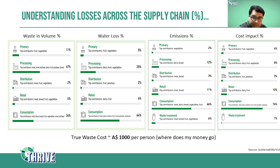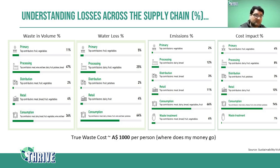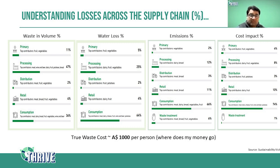We can see that the maximum waste occurs at the consumption level across the supply chain. Looking at all four tables — waste by volume percentage, water loss percentage, emission percentage, and cost impact percentage — consumption has the biggest role to play. If all this wastage is accounted for in money, it's approximately $1,000 per person per year. The bigger tragedy is that we do it ourselves with our own hands — this is the money in terms of food that goes into the trash bin and ultimately lands in landfill.